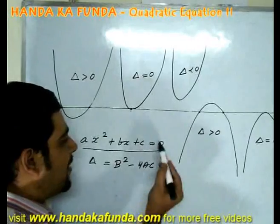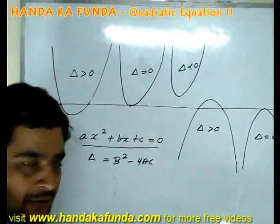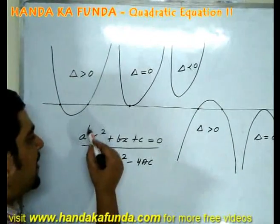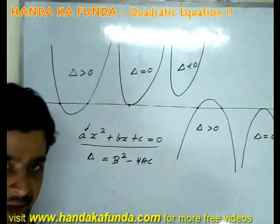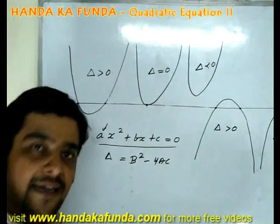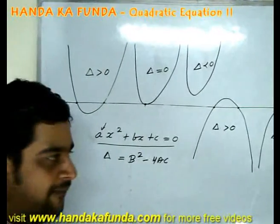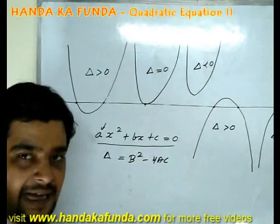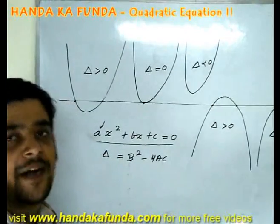If I look at the equation ax squared plus bx plus c is equal to 0, I will look at specifically the coefficient of x squared. If the coefficient of x squared, which is a here, is a positive value, then the graph will open upwards. If a is a negative value, then the graph will open downwards.